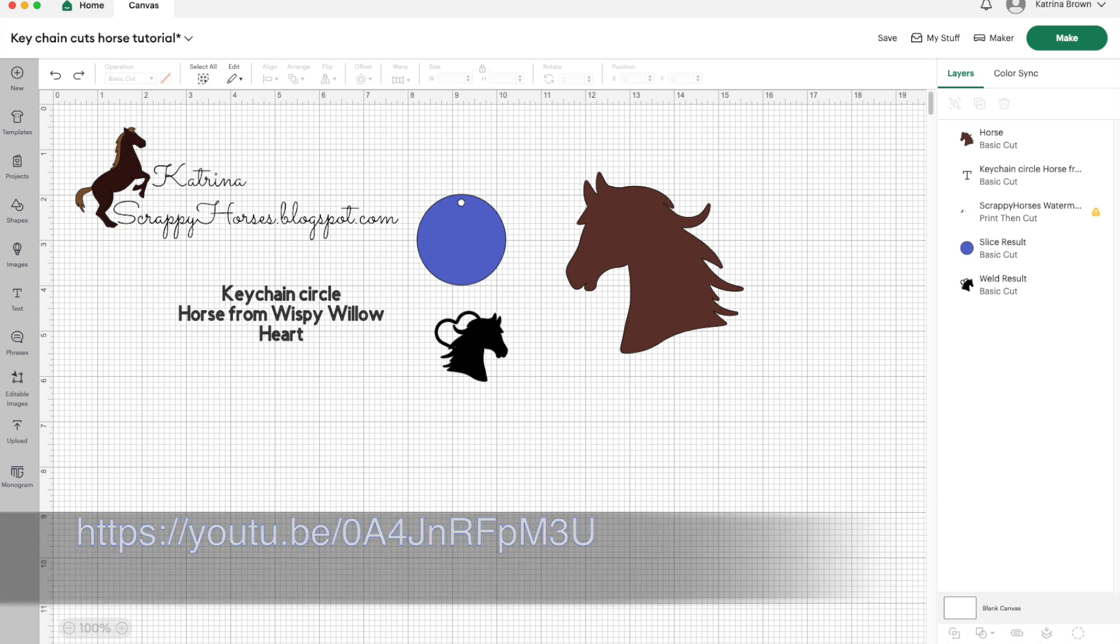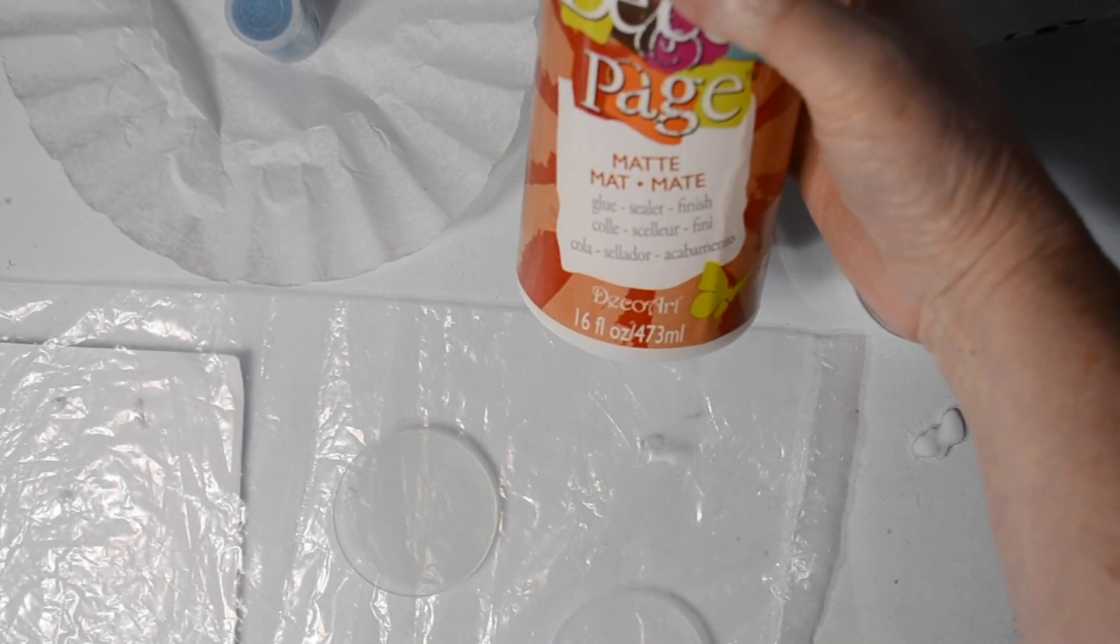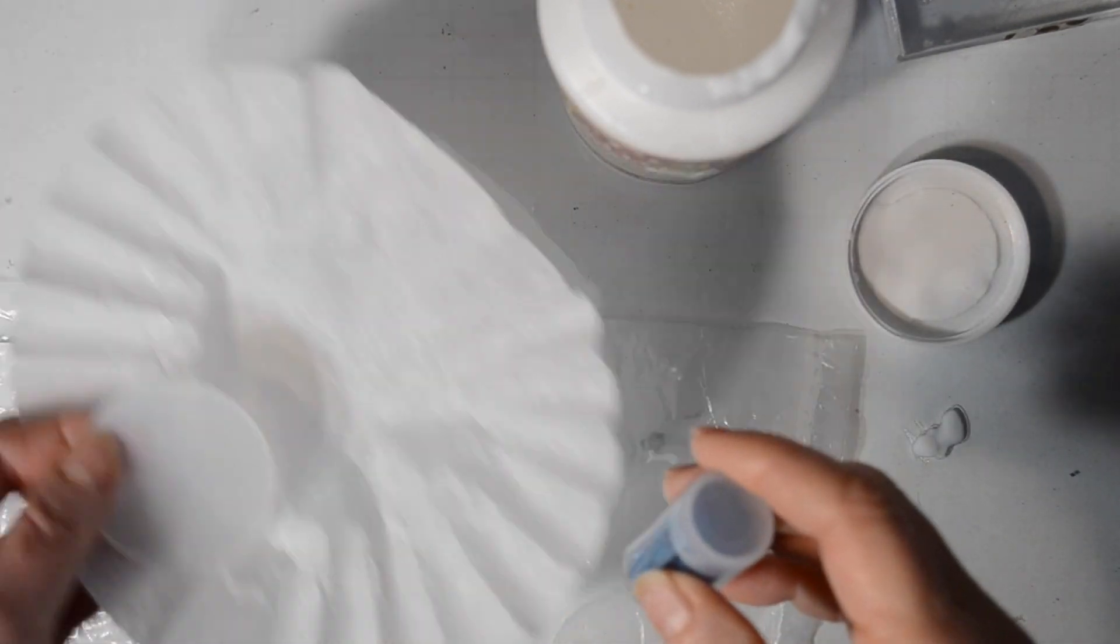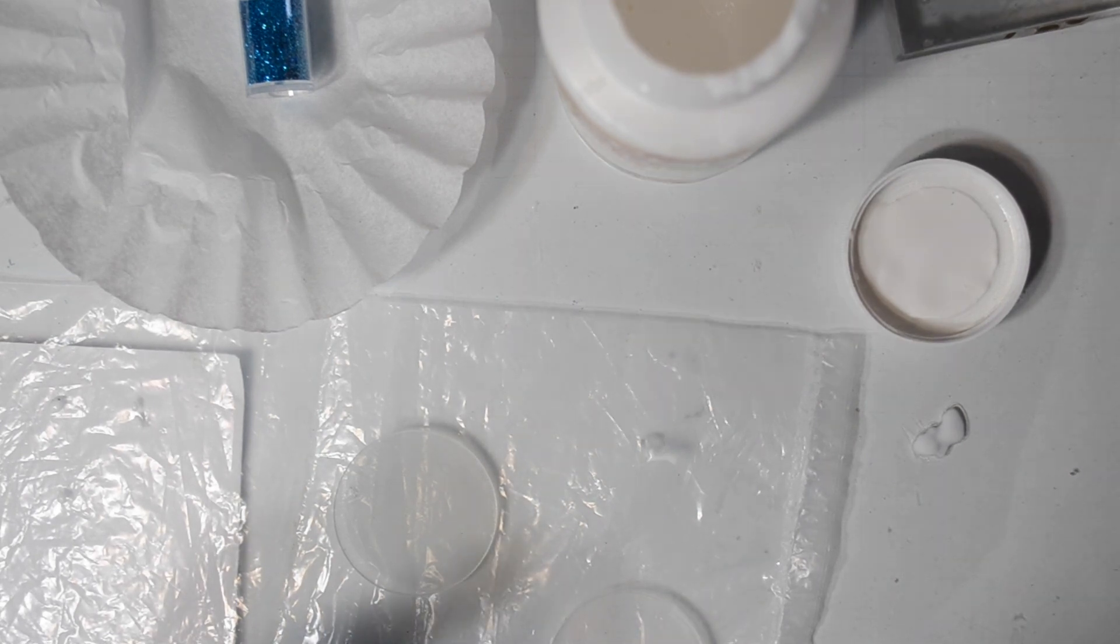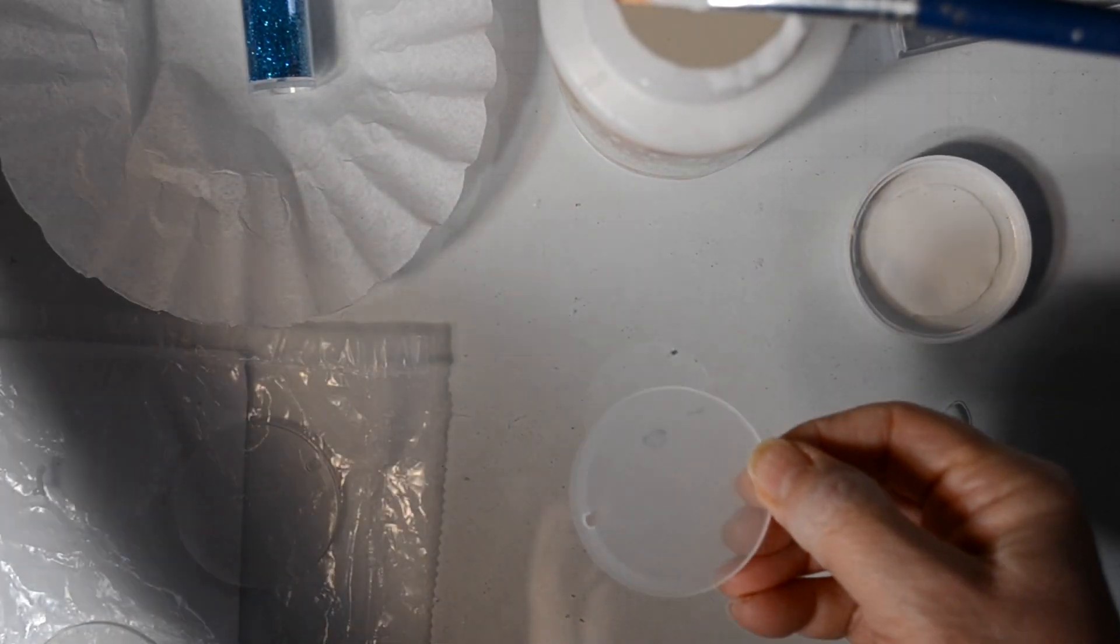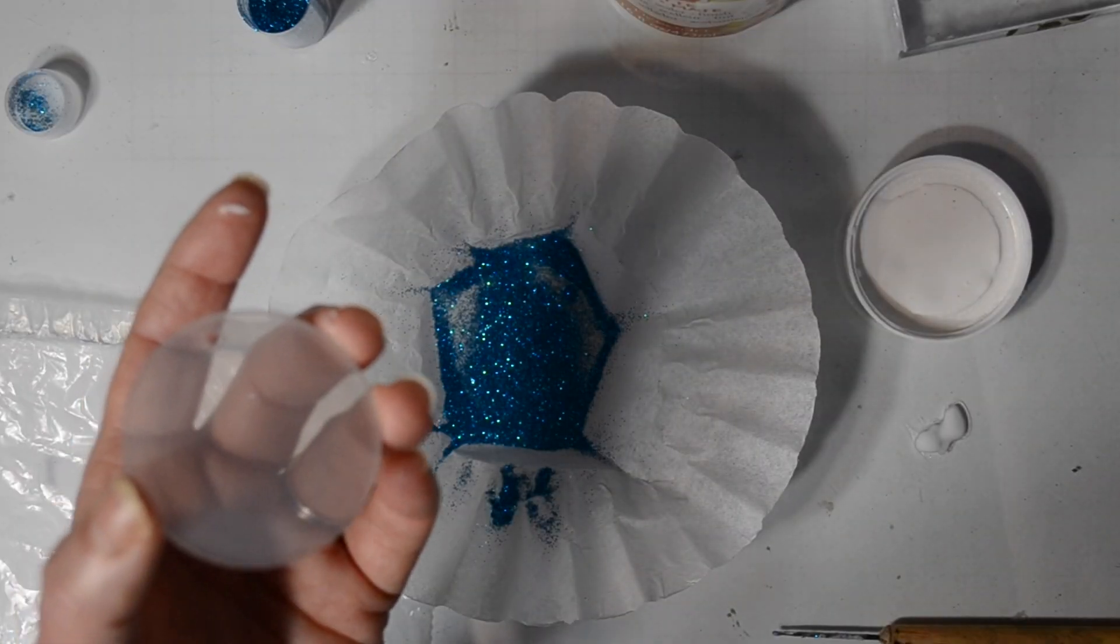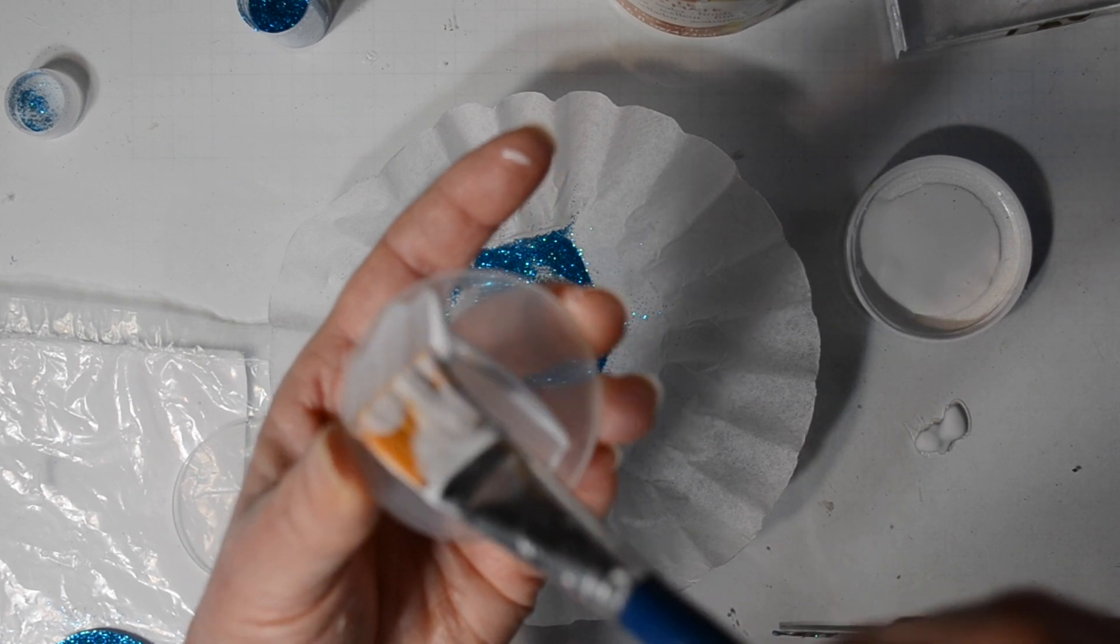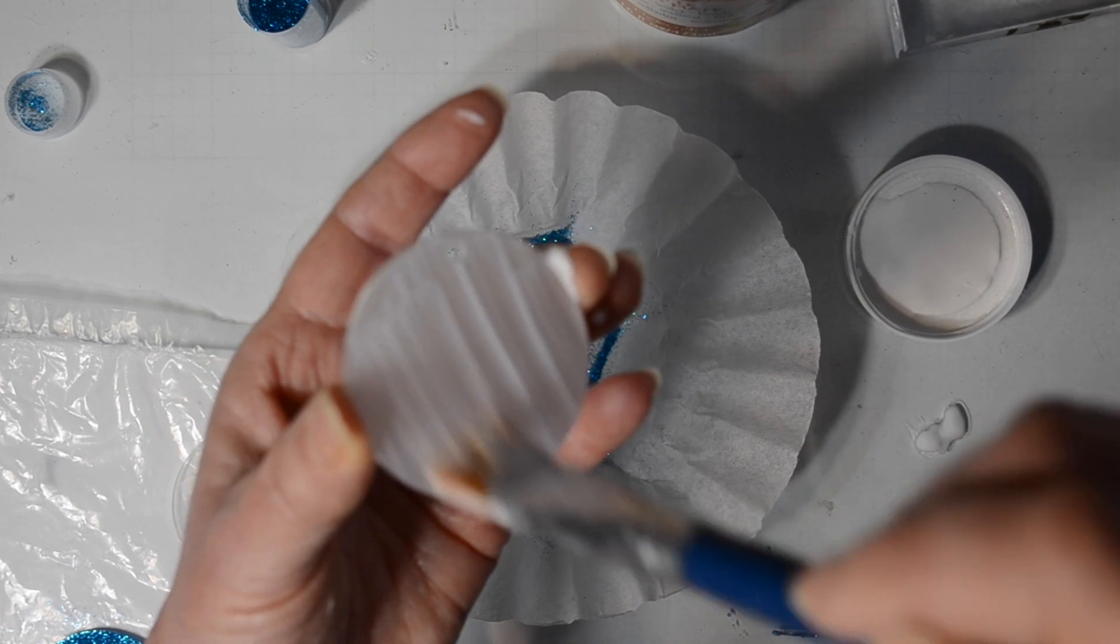I move right on into making this keychain. I am starting with some decoupage matte glue or sealer. What I'm going to do is once I peel the backing off of this little circle, I'm going to just with a paintbrush paint the decoupage sealer or glue onto this.